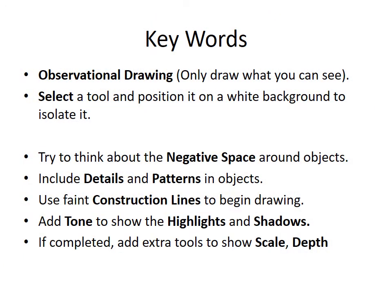Our key words to consider today before we start the work are observational drawing — we want you to draw only what you see. From home, you could select a tool, something you might find in a shed, garage, or drawer. It can be any sort of item: a pair of scissors, a spoon, a fork. Place it on the paper and think about the negative space on the outside edge of the object. Try to include details and patterning on the object to make it more interesting, as this will give you a much better grade.